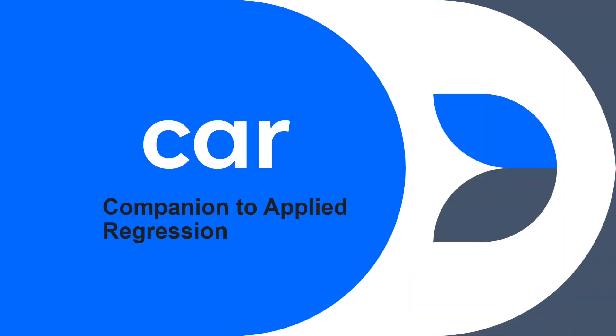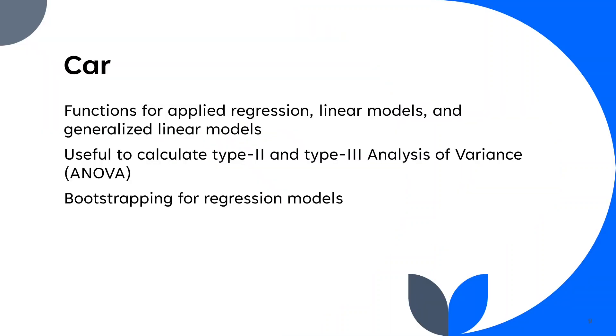The next package is car, which stands for Companion to Applied Regression. Car package has some functions for applied regression, linear models, and generalized linear models. Car package is also very useful to calculate type 2 and type 3 analysis of variance. Basically, there is no function in base R to calculate type 2 and type 3 ANOVA, so car package is the best option. In addition, this package has also some functions for bootstrapping for regression models.